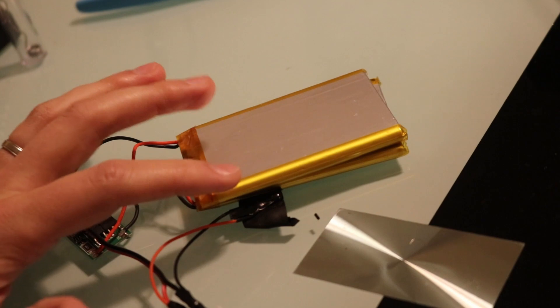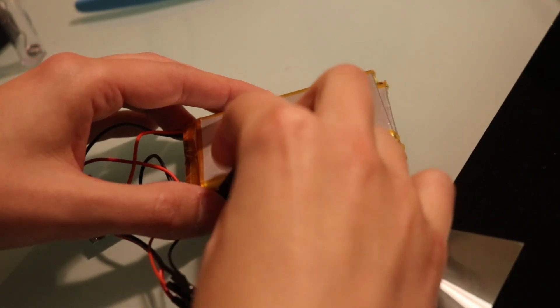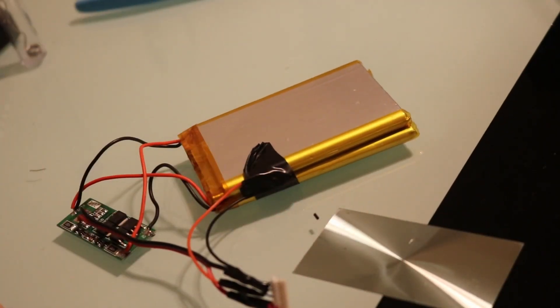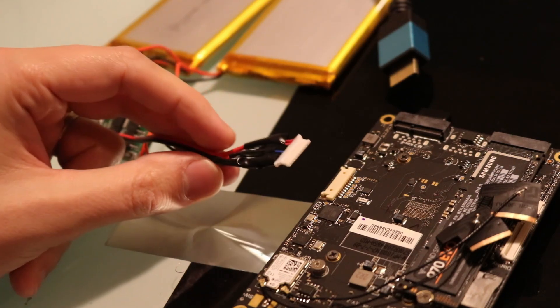And the final step of the build is to tape your thermistor to both battery packs like so. Once you've verified your voltage it's okay to plug in your LiPo connector.